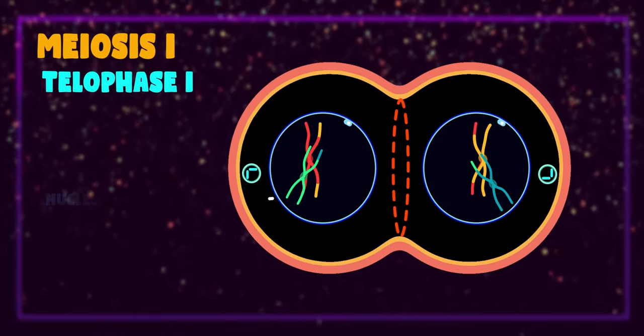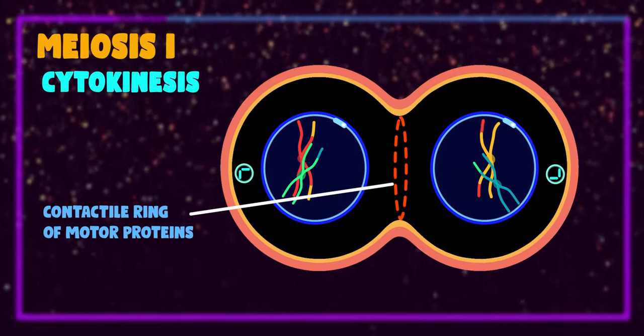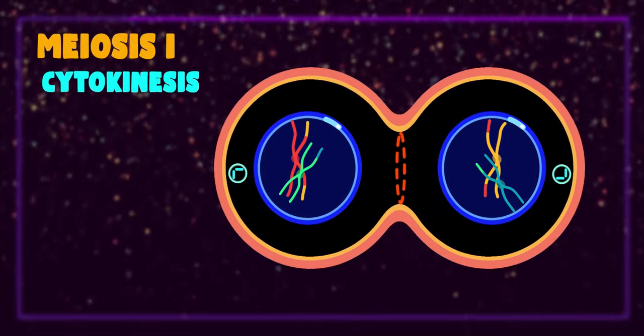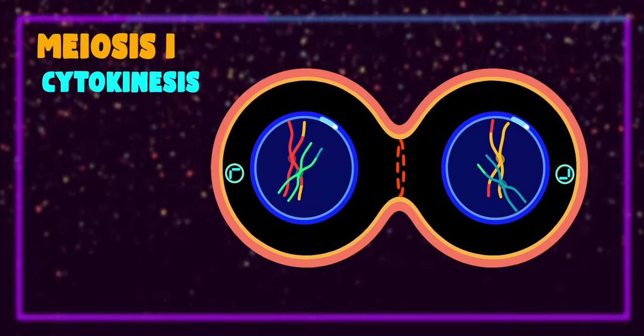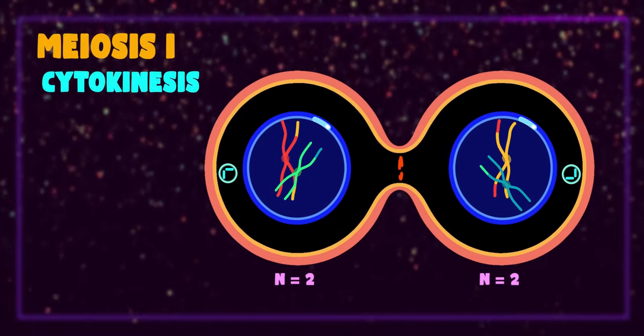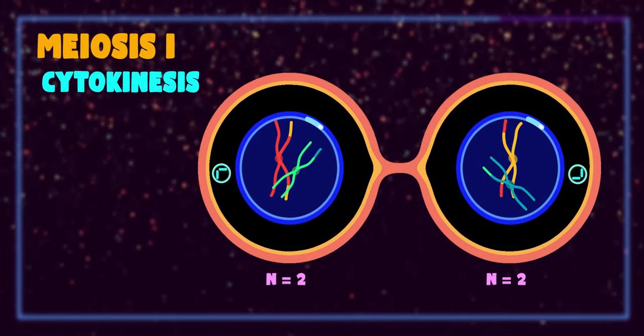Cytokinesis occurs by formation of a ring of contractile proteins or motor proteins and results in formation of two cells having half the number of chromosomes, but each chromosome having a pair of sister chromatids. The purpose of meiosis 2 is to separate these pairs of sister chromatids.